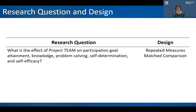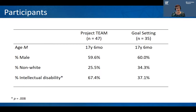We wanted to know the effect of Project TEAM on participation goal attainment, as well as knowledge and problem solving about environmental barriers and strategies to resolve those barriers, and self-determination and self-efficacy. We did a research design with two groups. One group did Project TEAM, and the other group worked on a goal without Project TEAM. In the Project TEAM group we had 47 people, and in the goal-setting group we had 35 people. The groups were about the same age, had the same gender identities, and similar race and ethnic identity backgrounds. However, the groups differed on intellectual disability, with more individuals in Project TEAM having learning disabilities or intellectual disabilities.